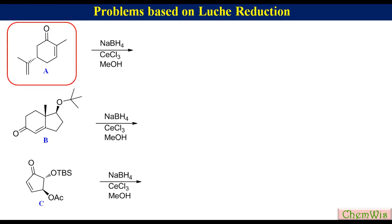In compound A, there are two faces of the ketone for the attack by the reducing agent. Attack of the reagent from the back face is hindered due to steric hindrance with the propene group, so attack occurs preferably from the top face, leading to the formation of the cis product.